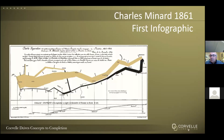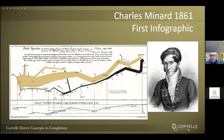Histories of infographics often start with a celebrated 1861 diagram produced by Charles Menard that shows the decimation of Napoleon's army during his doomed invasion of Russia. The wide brown swath depicts the size of Napoleon's invading army advancing on Moscow, while the narrow black line represents the remnants of the retreating army. Imagine creating a visualization still admired almost 200 years later.